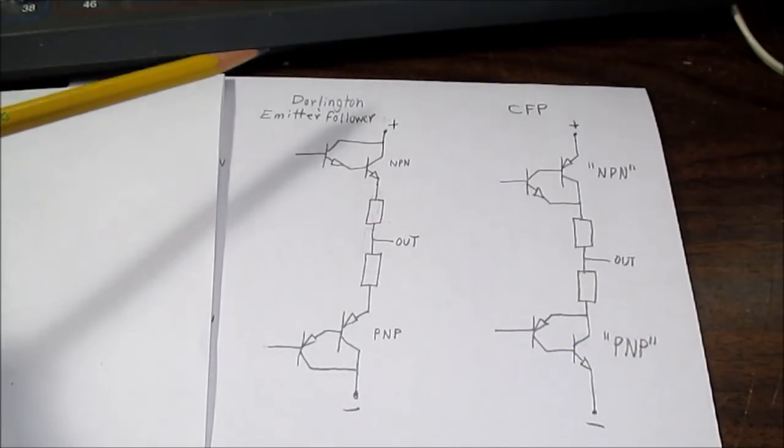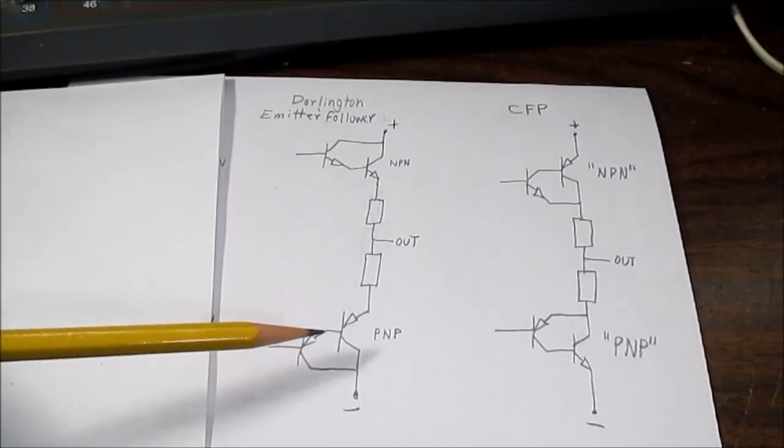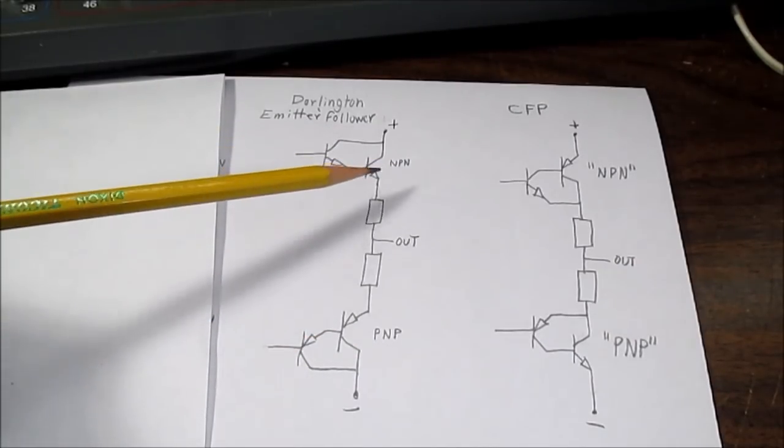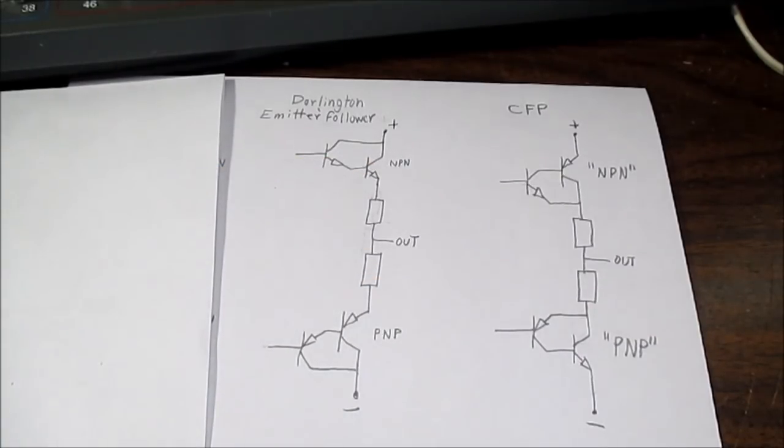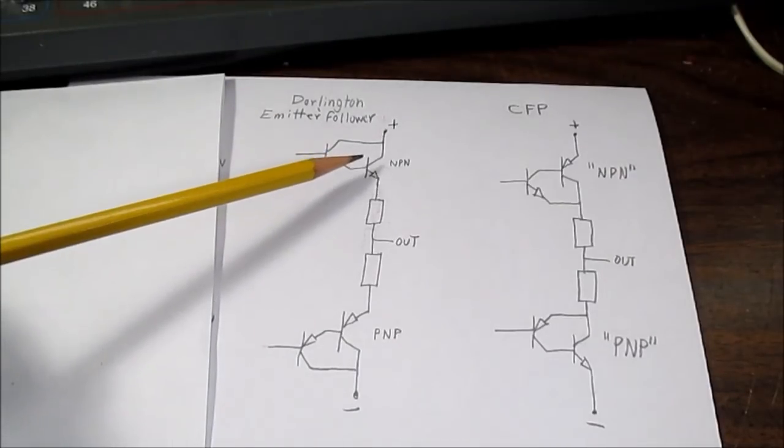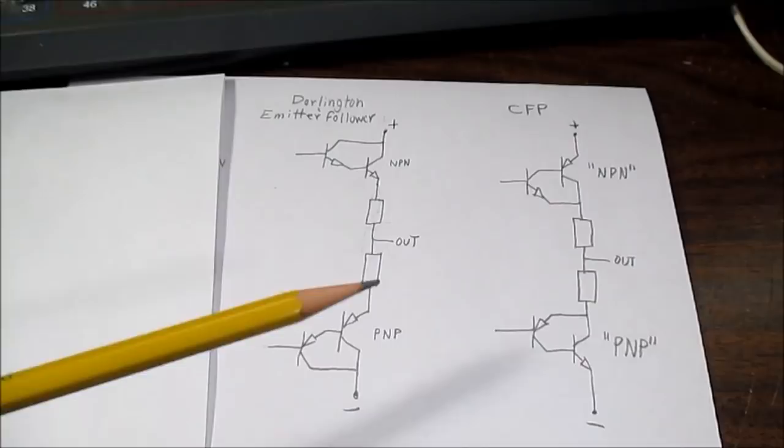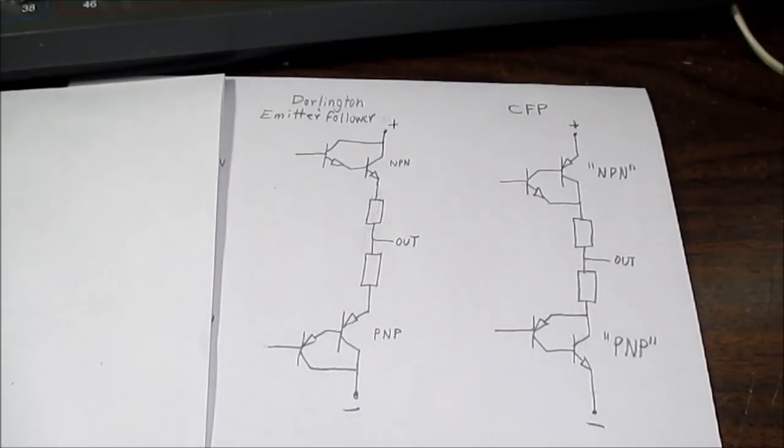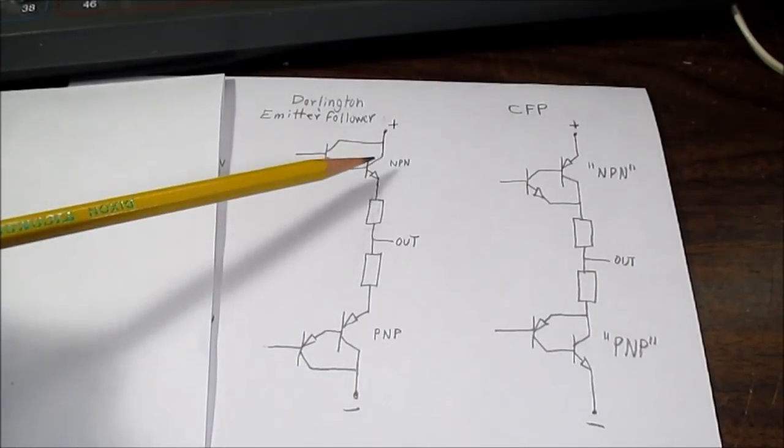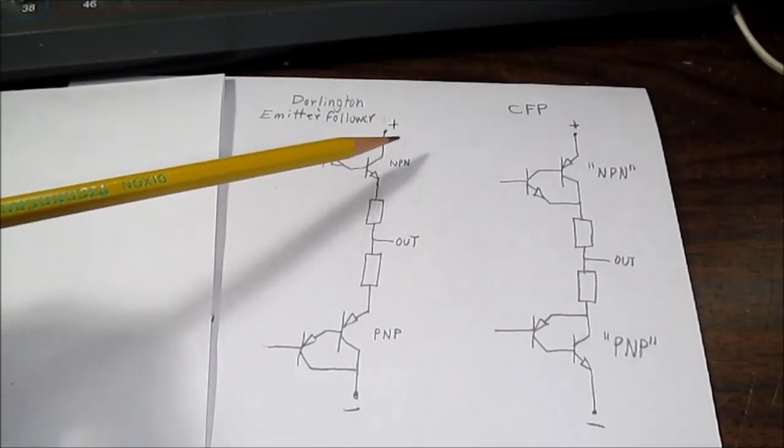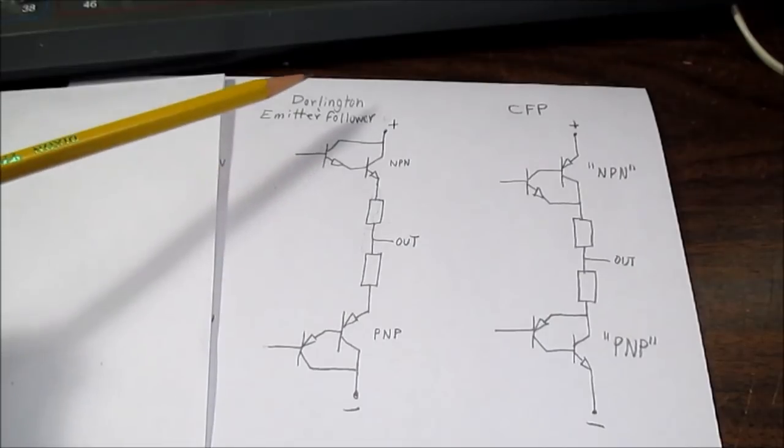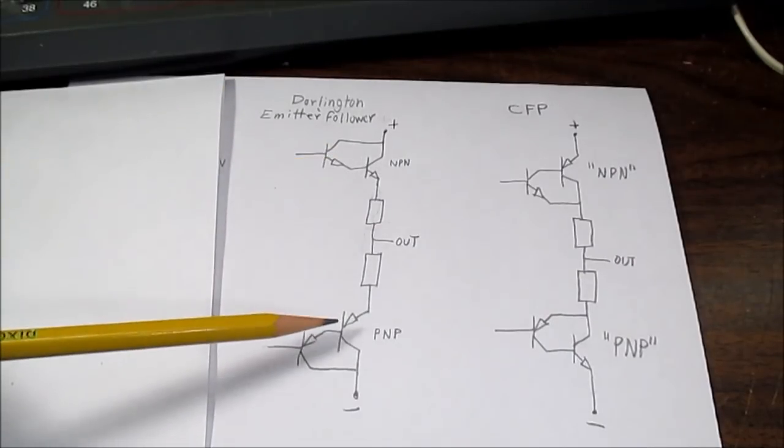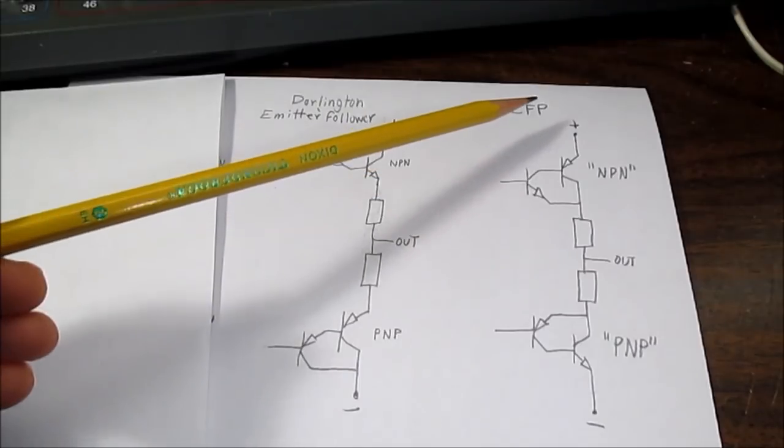Another positive for the Darlington emitter follower configuration, is paralleling output transistors in high power amplifiers. If you're making amplifiers over 100 watts, then it starts to be desirable to use parallel output devices. Now, if you're making a 500 watt amp, you might want to have four or five output transistors in parallel. And it works better using the Darlington configuration to parallel. It doesn't work that well with the CFP.